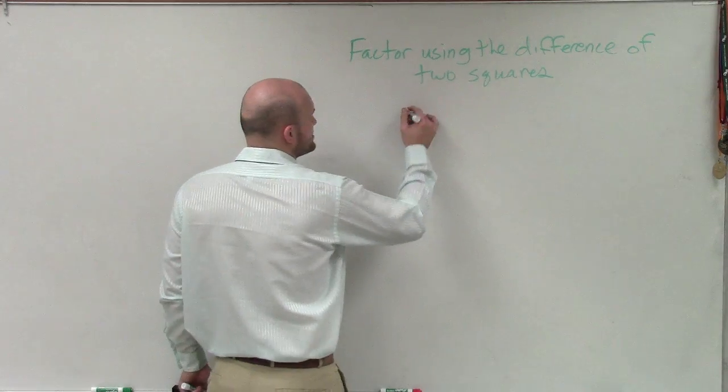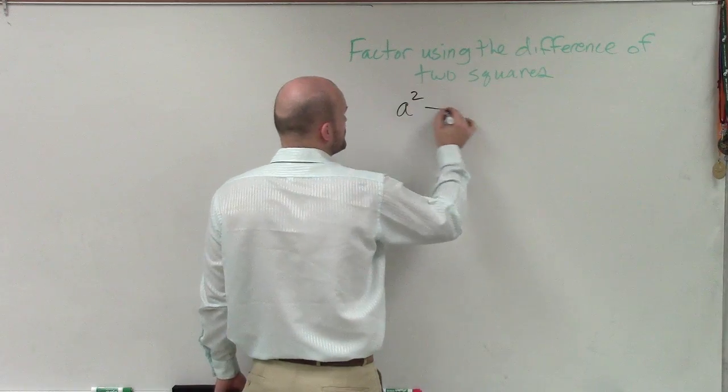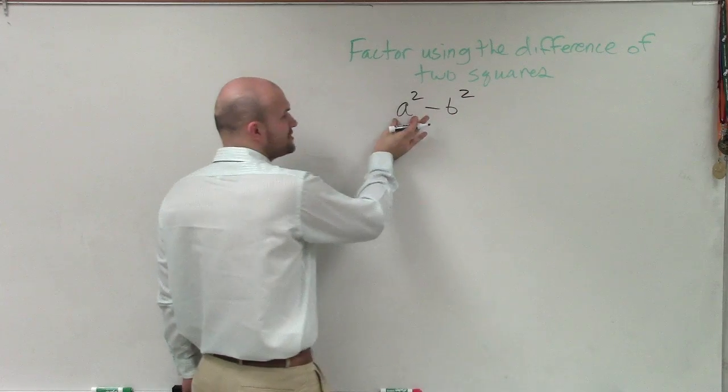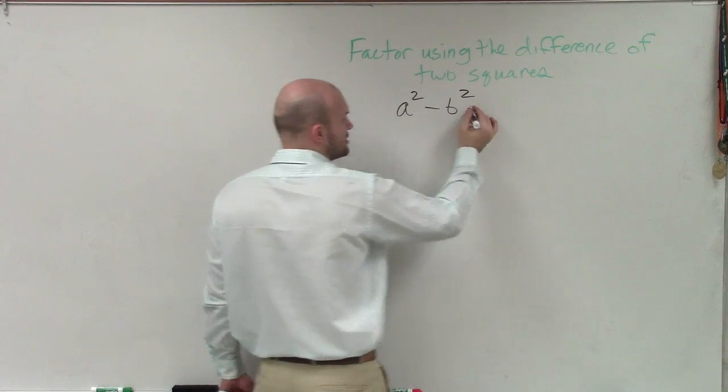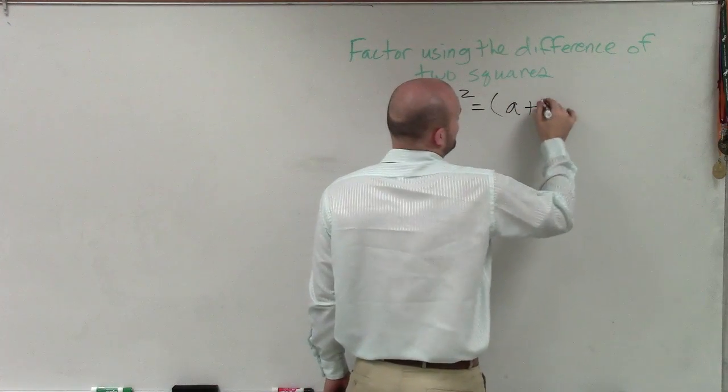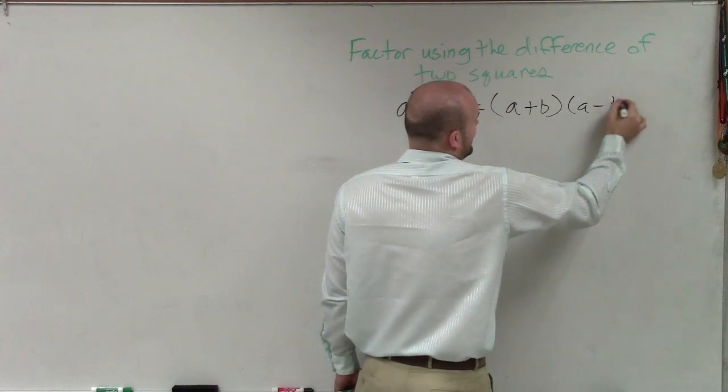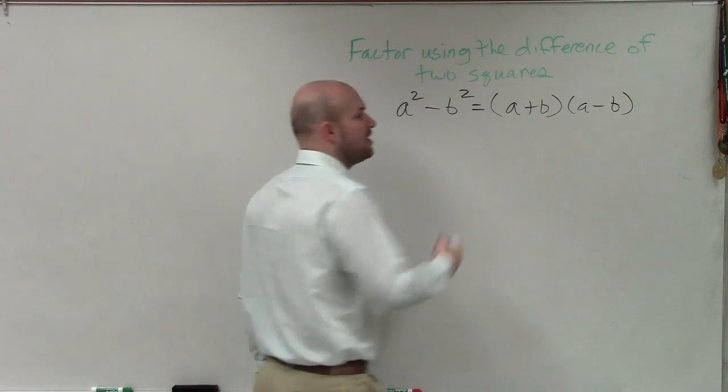So again, what the difference of two squares states is when I have a squared term subtracted by another squared term, I can rewrite that as the product of a plus b times a minus b.